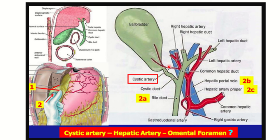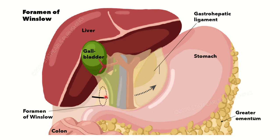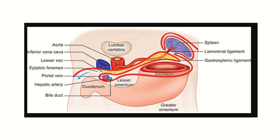Here we can see the cystic artery, the gallbladder, and during the operation the bile duct in front, then the hepatic artery, and most posteriorly the hepatic portal vein. In another clear view of the anterior boundary, the three important structures are: the common bile duct, the portal vein, and the hepatic artery. This foramen is known as the epiploic foramen or foramen of Winslow, and it is the only pathway to communicate between the greater and lesser omentum.